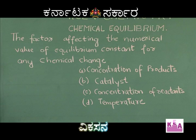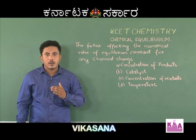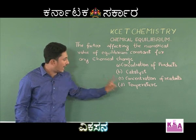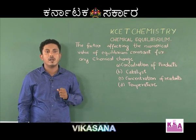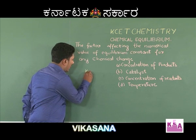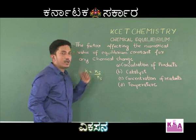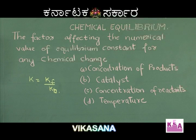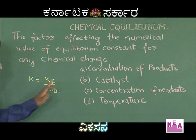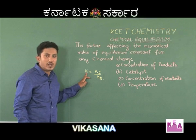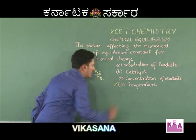When the temperature is increased, the rate of the forward reaction increases and the rate of the backward reaction also increases, but to a different extent because the activation energy for the forward and backward reactions will be different. The equilibrium constant K is equal to Kf by Kc, that is the rate constant for the forward reaction divided by the rate constant for the backward reaction. When the temperature is increased, both rate constants vary to different extents. Hence, option D, temperature, is the right answer.